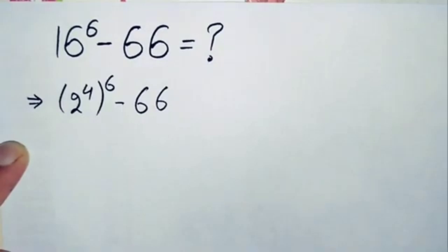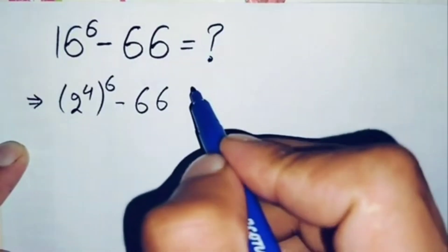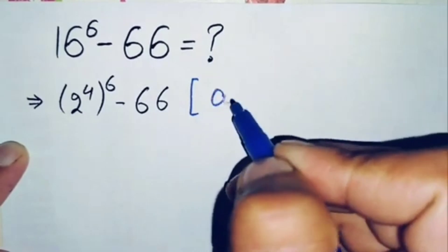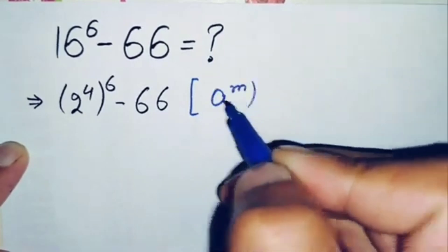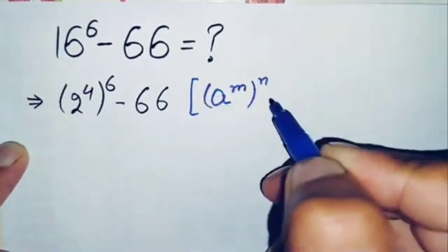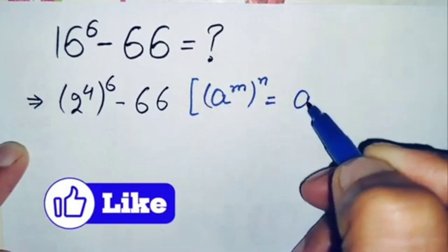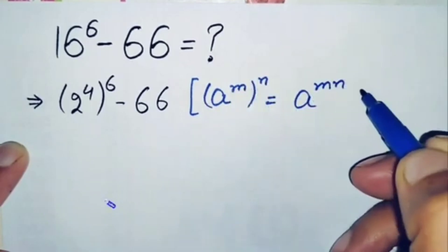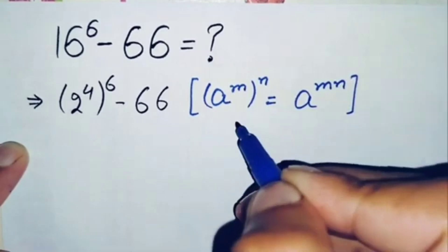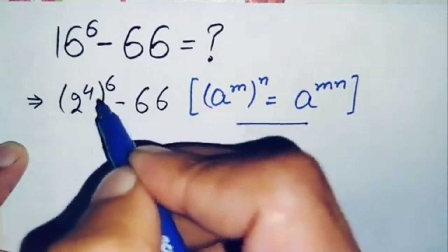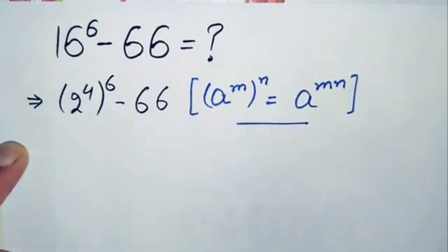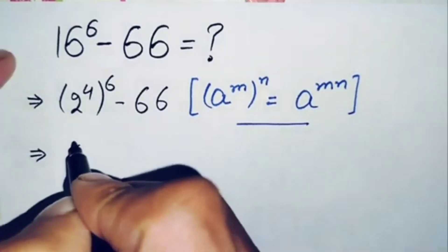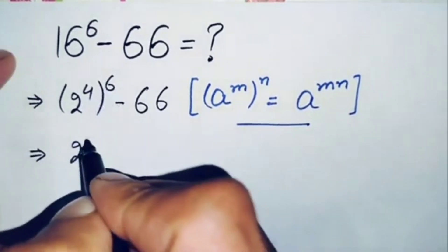Now inside this expression we will use the exponential math property: a raised to power m, whole raised to power n, which can also be written as a raised to power m times n. Using this exponential property, we multiply the powers, so this will become 2 raised to power 4 times 6, which is 24, minus 66.